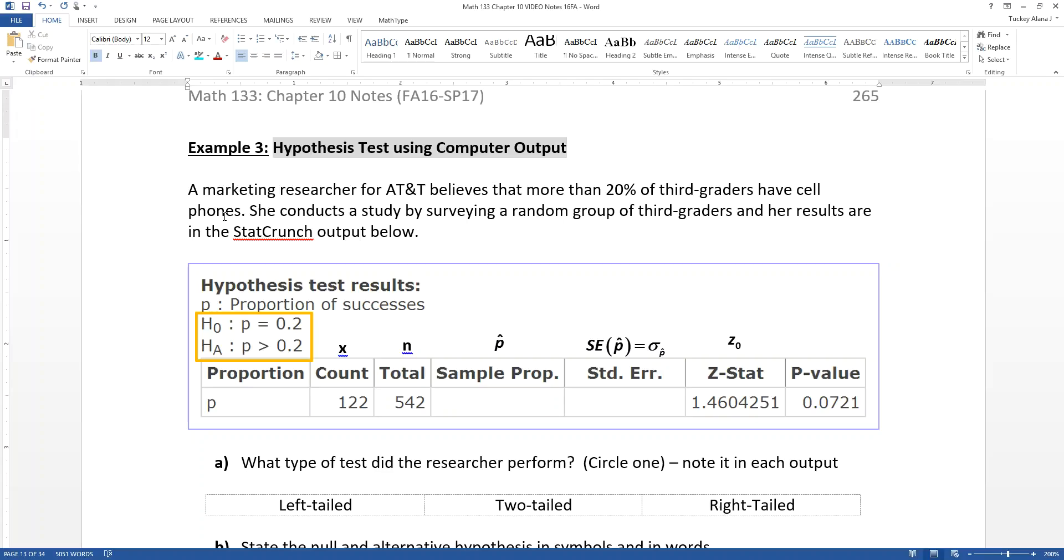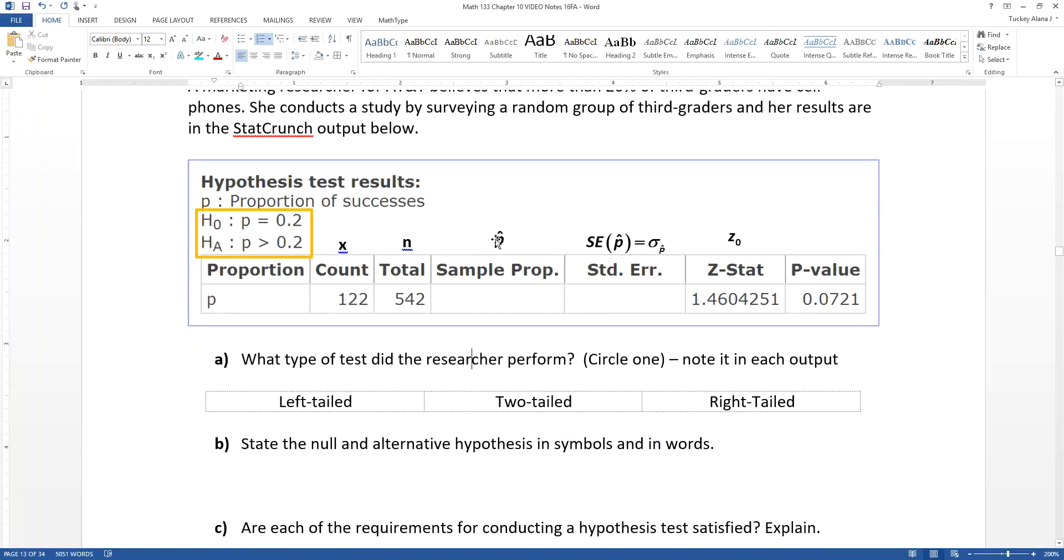StatCrunch being a computer program that I use to sometimes do the heavy lifting for you and then ask you a whole bunch of questions about hypothesis testing using that output. So you can see that I've labeled some stuff here and we'll come back to these things later on in the problem. Suffice it to say that the count is x, the total is n, your sample size.